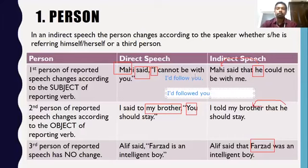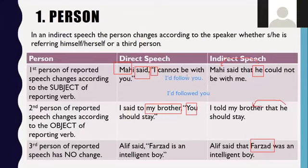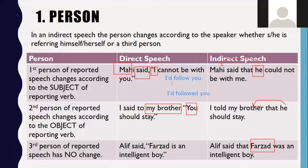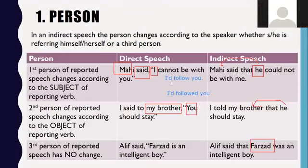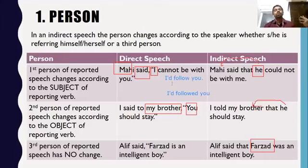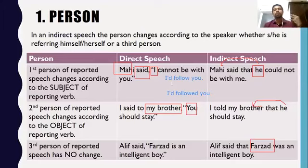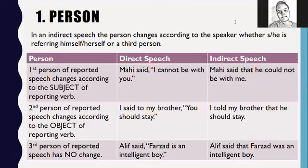A student asked: if the reporting verb is in future tense — future indefinite tense — there will be no change in the reported speech regarding the verb. But in most cases, we use past tense for the reporting verb because when we mention someone's speech, it's already in the past. We don't know what someone is going to say in the future. For example, look at the news — we only see past events reported.